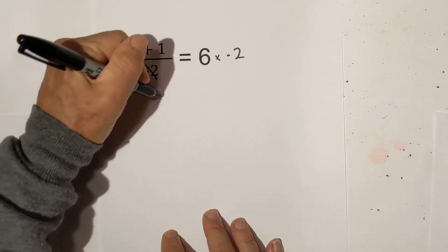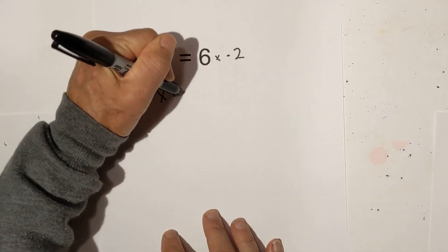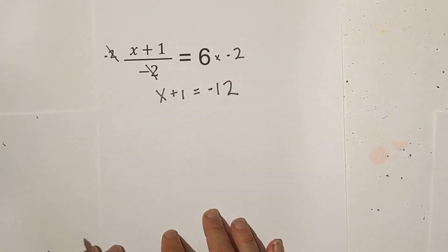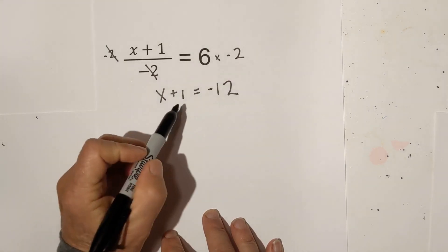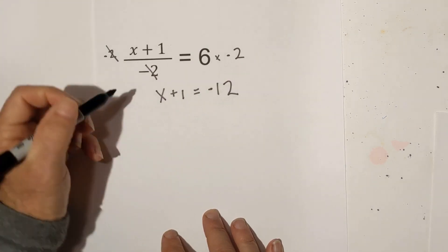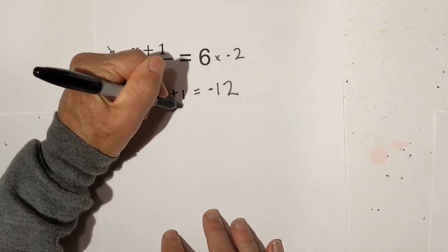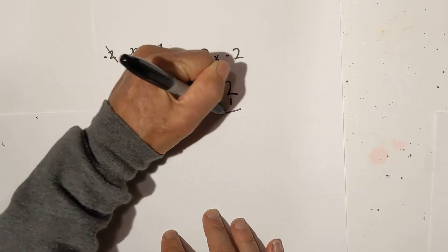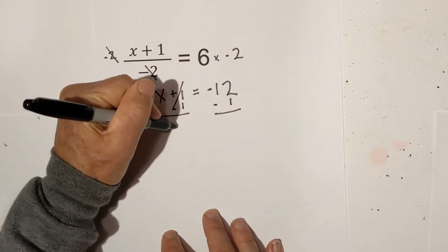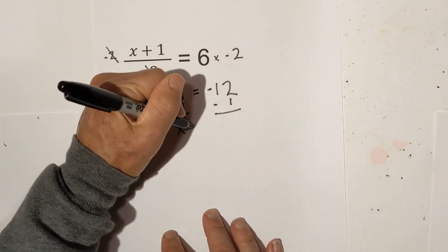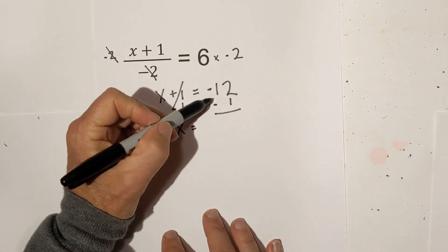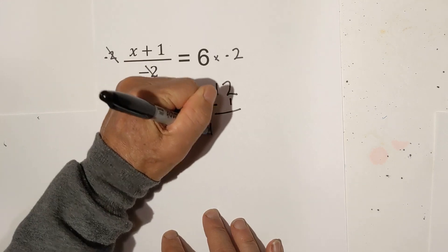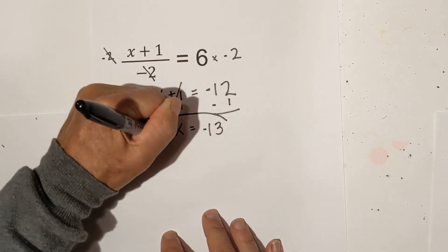These will eliminate. So we have x plus 1 equals negative 12. Now all we do is we want to get x by itself. So we will subtract each side by 1. These cancel. And remember the same rule that we applied last time. A negative and a negative is just like a positive, but keep the sign is a minus 13.